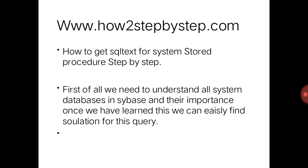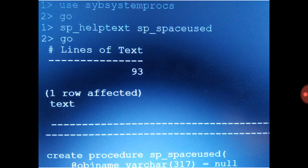To find the SQL text of stored procedures, they are all recorded in the sybsystemprocs database. As shown in this picture, you use that database with 'use sybsystemprocs', and then sp_helptext is the system procedure that will help you find the text of a stored procedure.